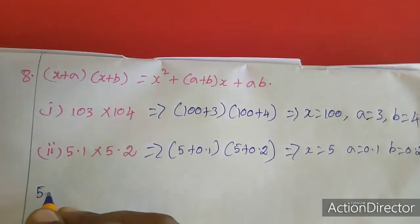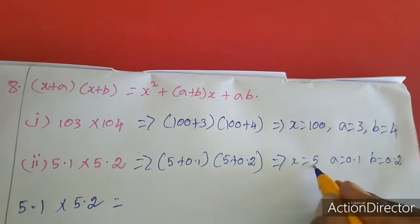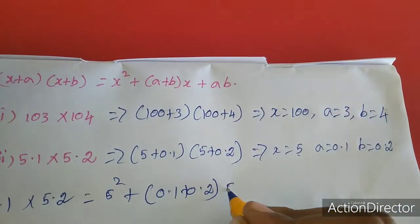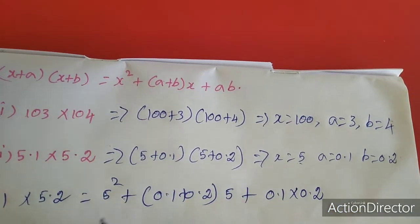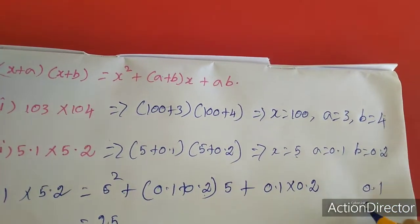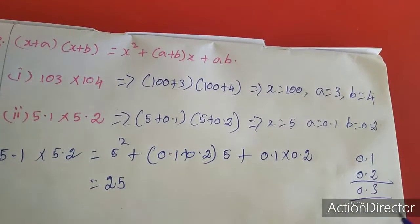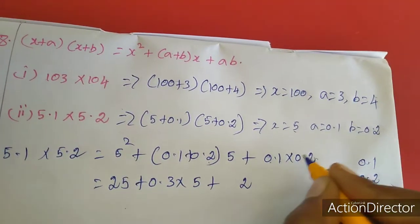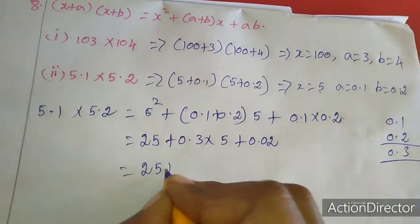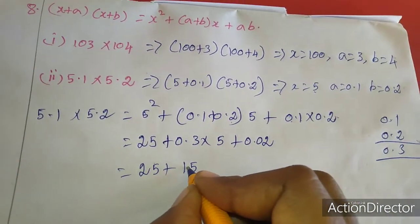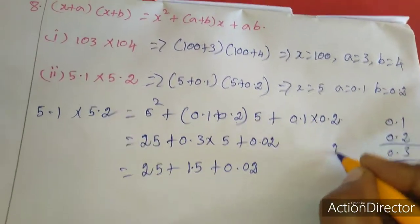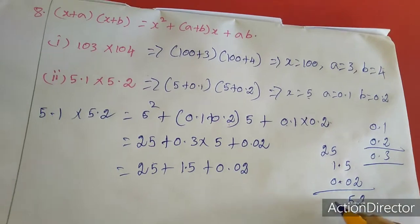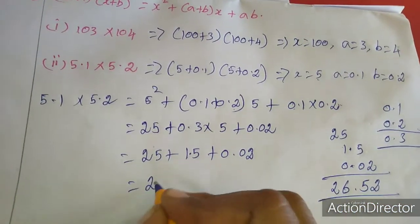Working out 5.1 times 5.2: x squared means 5 squared equals 25. Then a plus b is 0.1 plus 0.2 equals 0.3, times x which is 5, giving 1.5. Then a times b is 0.1 times 0.2: 1 times 2 is 2 with 2 digits after the decimal, so 0.02. Adding: 25 plus 1.5 plus 0.02 equals 26.52. So the answer is 26.52.